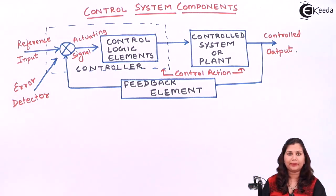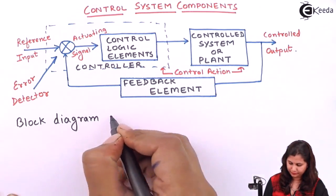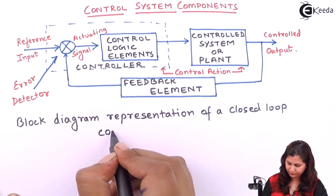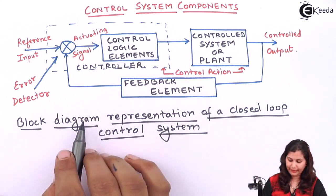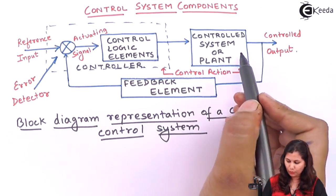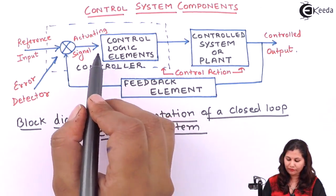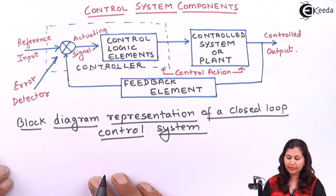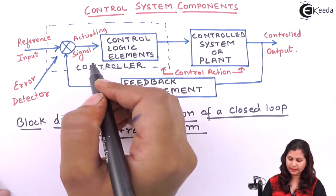This is the block diagram representation of a closed-loop control system. In this block diagram, we have three elements. The first is the feedback element, second we have the controlled system, and third we have the controller. This controller is the sum of the control logic elements and the error detector. So the three basic elements of the closed-loop control system are the feedback element, controlled system, and the controller.